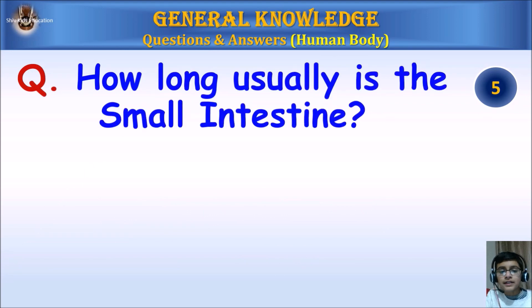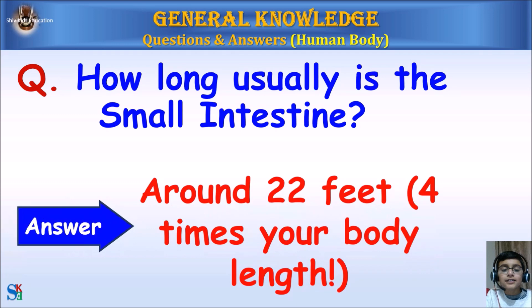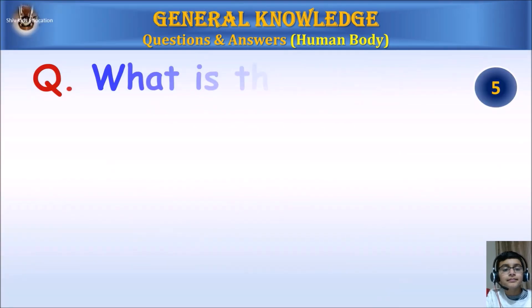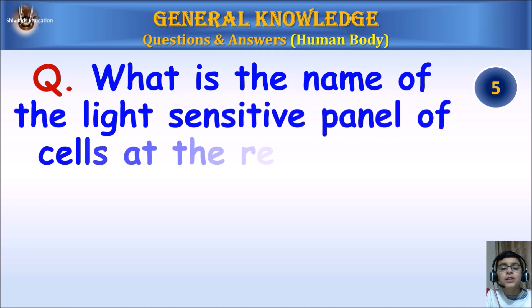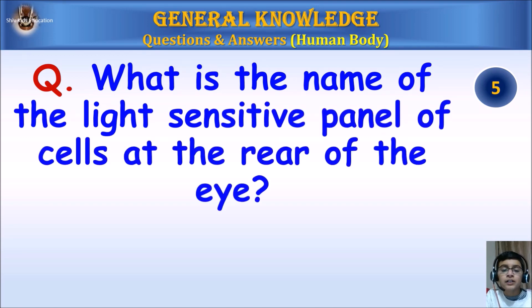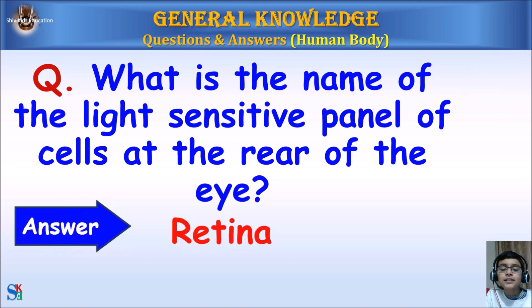How long is the small intestine usually? Answer: Around 22 feet — four times your body length. What is the name of the light-sensitive panel of cells at the rear of the eye? Answer: Retina.